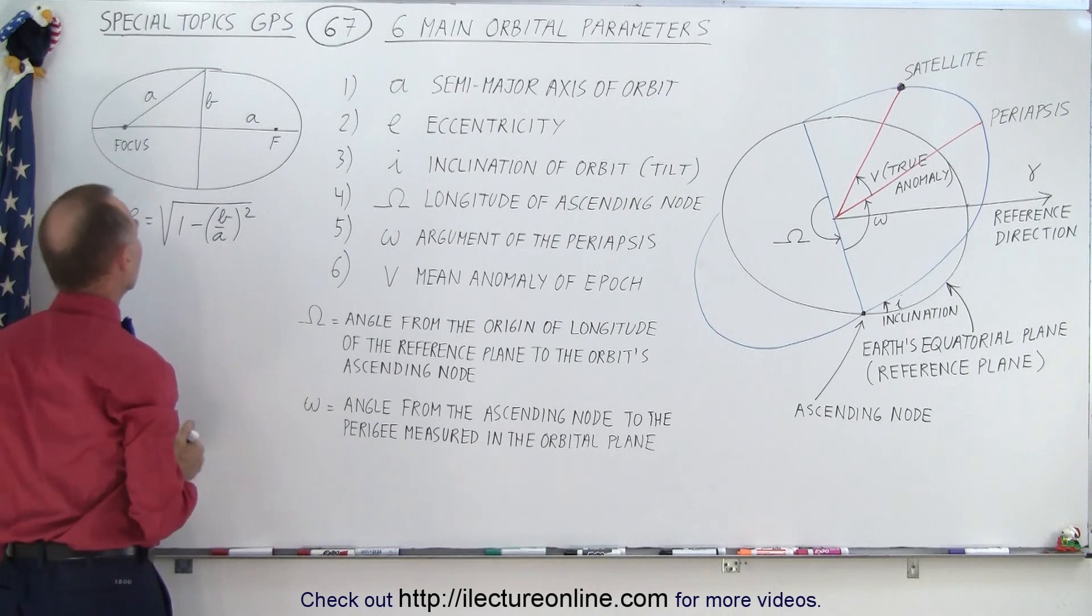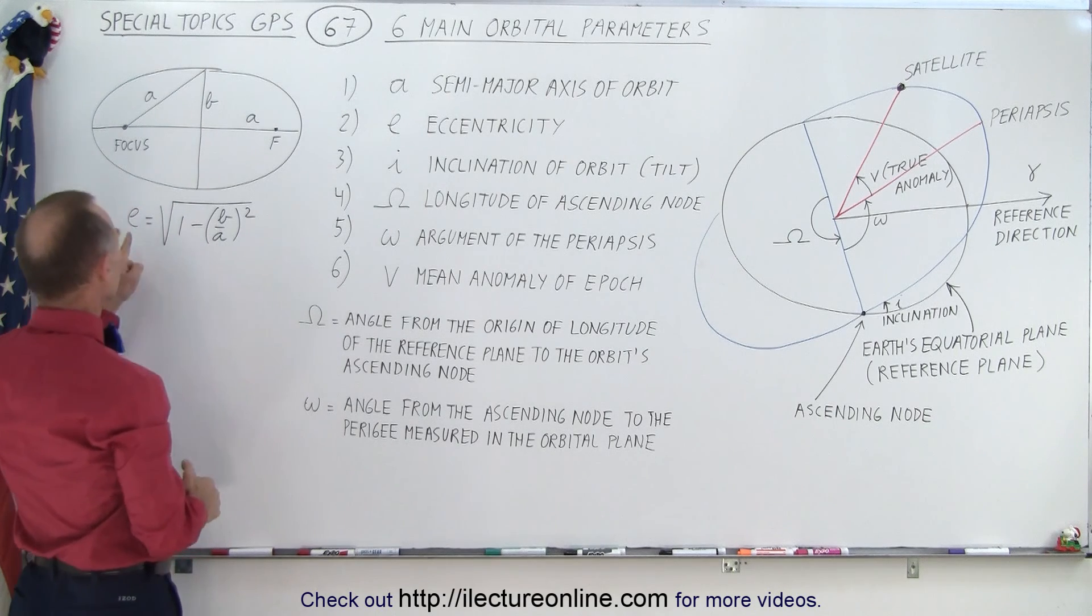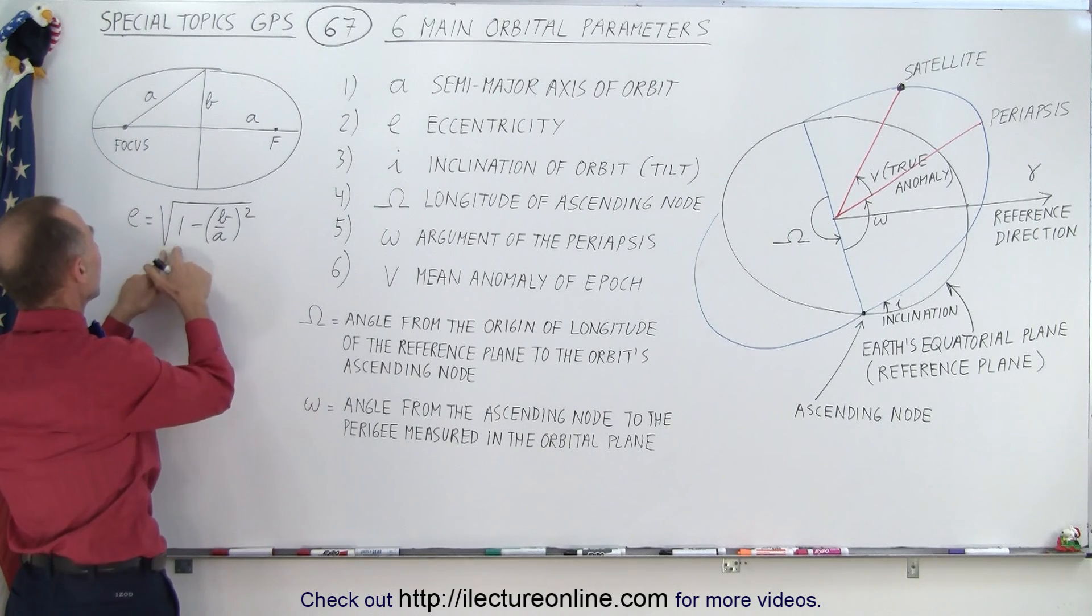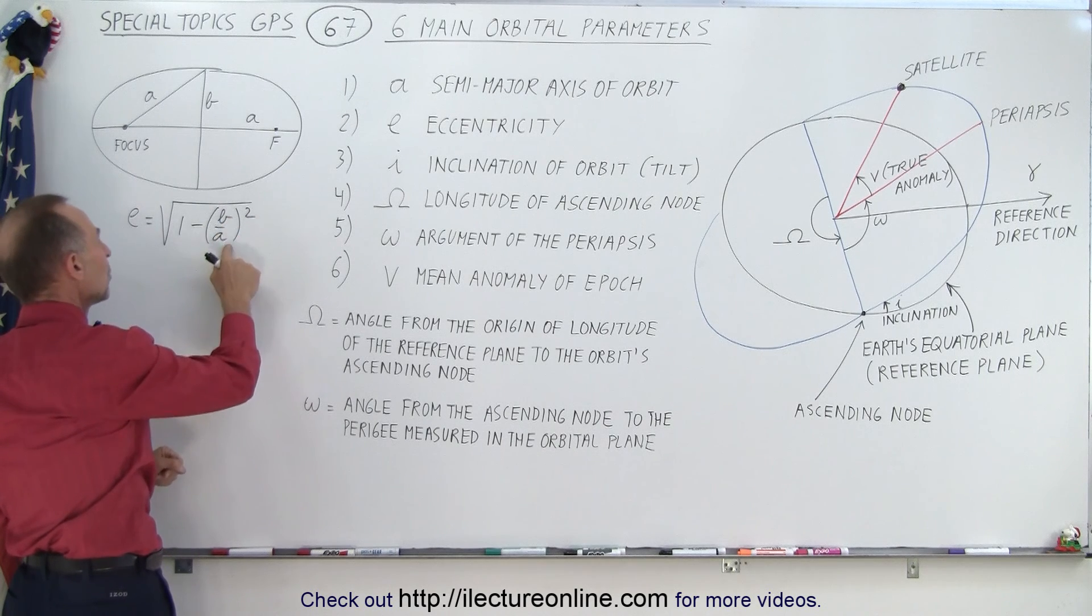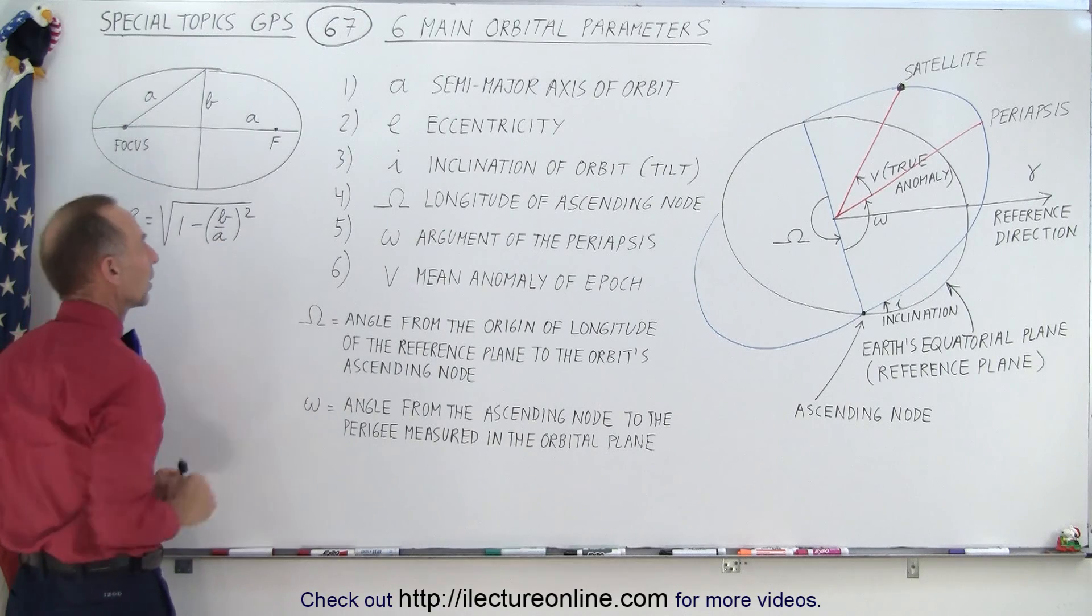Now the eccentricity is defined as the square root of one minus the ratio of B over A, which is the semi-minor axis divided by the semi-major axis quantity squared.